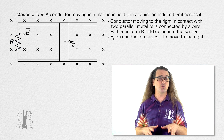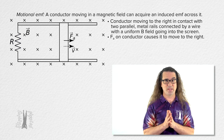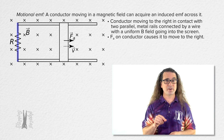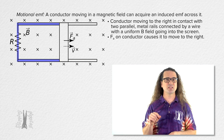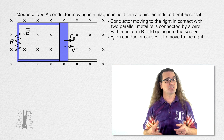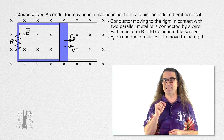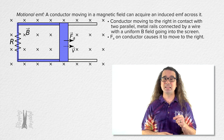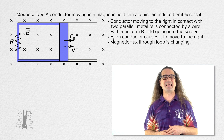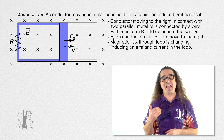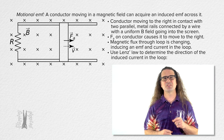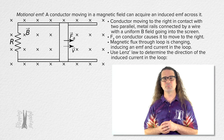A force is applied to the conductor to cause it to move to the right. Notice, a conducting loop is created by the wire on the left, the two parallel conducting rails, and the conductor which is being pushed to the right. The area of the loop is increasing in size, which means the magnetic flux through the loop is changing, which means there is an induced EMF and an induced current in the loop.